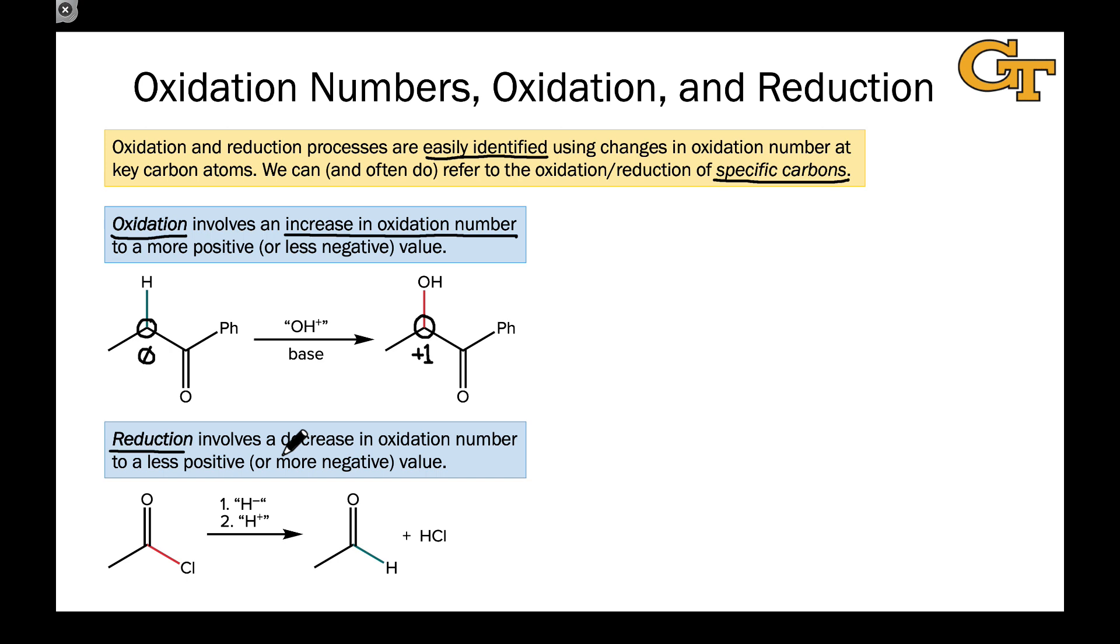However, reduction, naturally, involves a decrease in oxidation number at a particular atom. Take a look at the nucleophilic acyl substitution example that we've discussed so far. If we focus on the carbonyl carbon, the oxidation state of the carbonyl carbon here is plus three. See if you can verify that on your own based on the number of bonds to electronegative heteroatoms of that carbon.